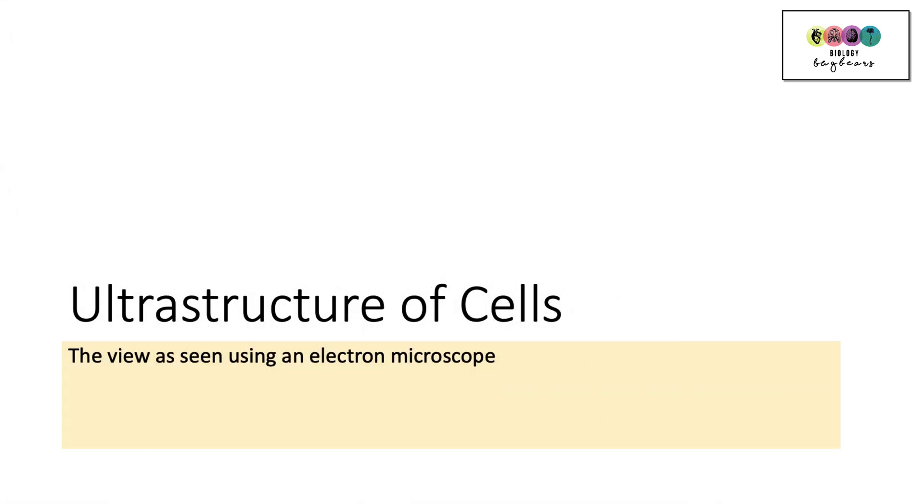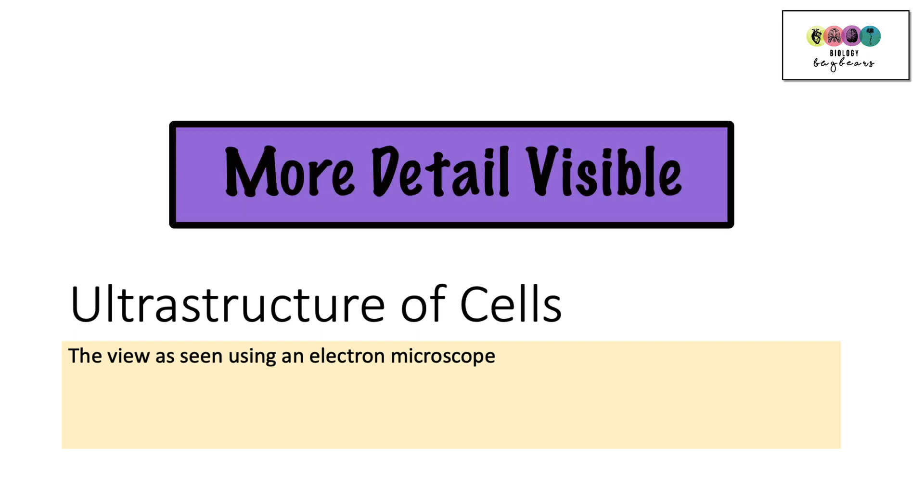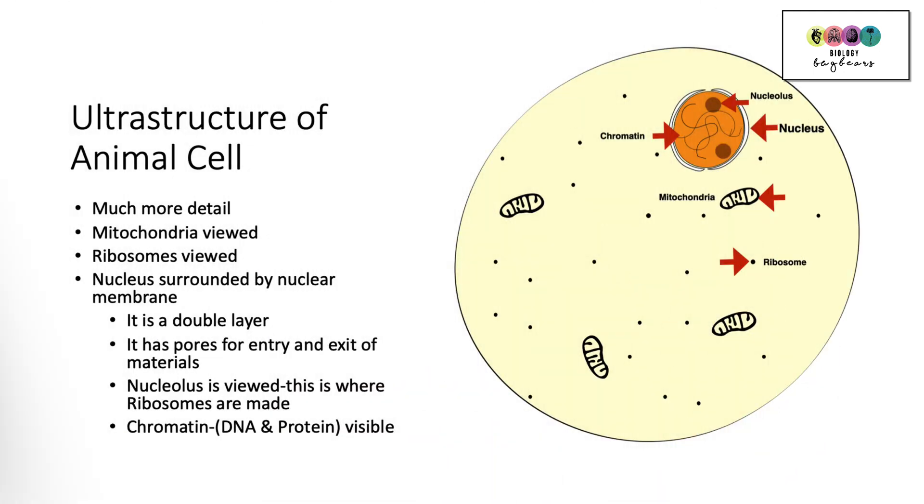So next it's on to the ultrastructure of the cells. This is the view of the cells that you would see using an electron microscope. So a very much more detailed structure of the cell. So when you look at an animal cell using an electron microscope you see a lot more detail. So this is an example of a diagram you might produce or you might draw from what you see under an electron microscope. You're going to see a lot more detail.